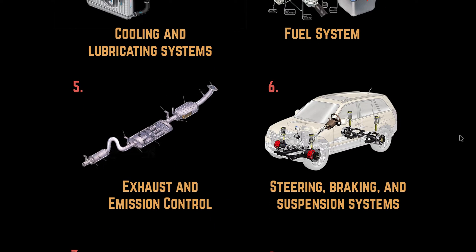Number five: the exhaust and emission control. This reduces the noise and CO2 emitted by the vehicle. It carries burned gas to the rear of the vehicle, thus reducing the noise of it as well, while the emission control system reduces the amount of CO2 produced by the engine.